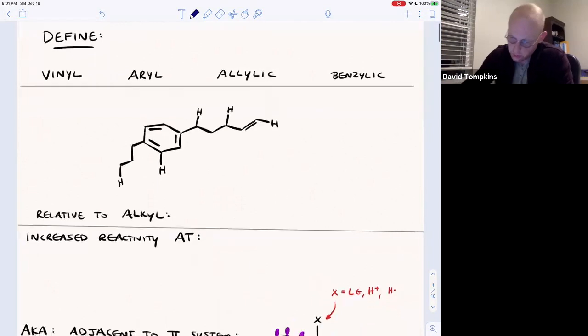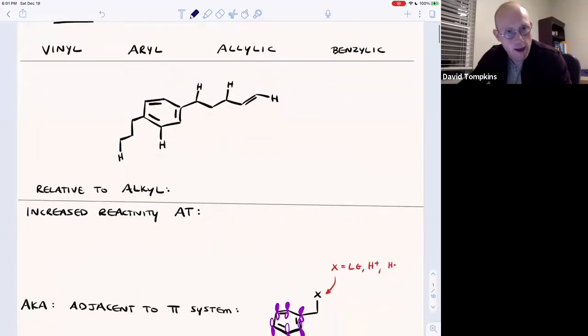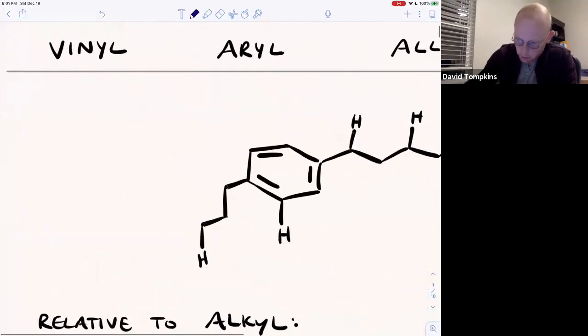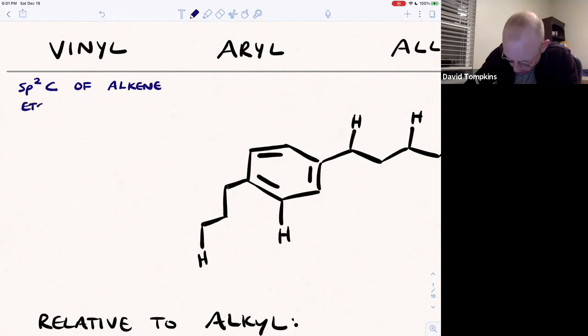So let's start with some definitions. A vinylic position or a vinyl atom is an sp2 hybridized carbon that's generally part of an alkene or doubly bound to some other atom, but usually it's an alkene.